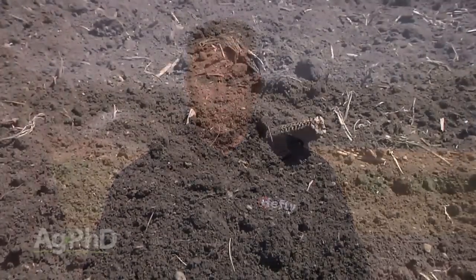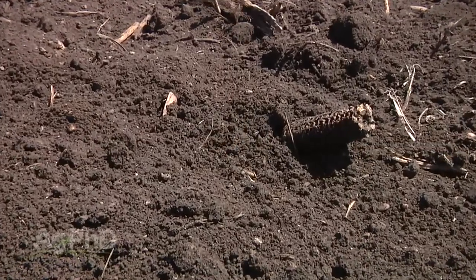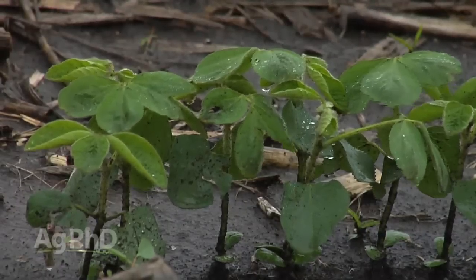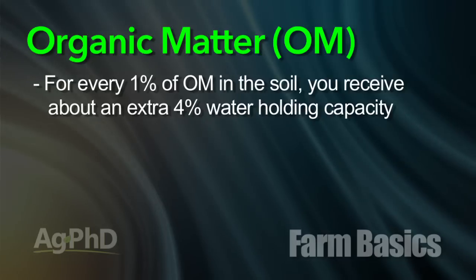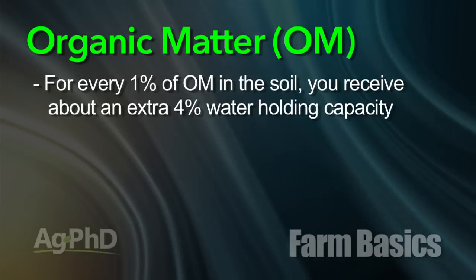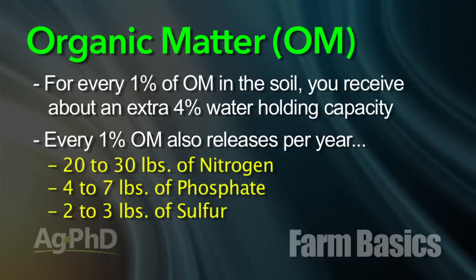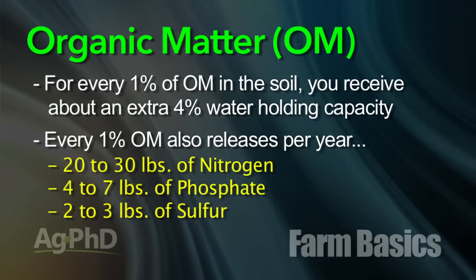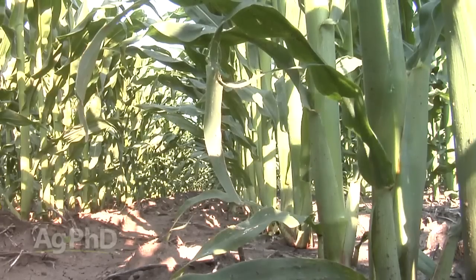With organic matter, and the reason why it's so important to farmers, it does a lot of good things. We want to have a fair amount of organic matter in the soil. Ideally, I'd like to see 5% or 6% organic matter in my soil. It basically makes my soil a little more cushiony — kind of like a sponge — in that it can absorb water and nutrients early in the season and then release the water and nutrients when your crop needs it. For every 1% of organic matter in soil, soil has approximately 4% more water holding capacity. Also, for every 1% of organic matter in the soil, it will release, for free, 20 to 30 pounds of nitrogen, 4 to 7 pounds of phosphate, and 2 to 3 pounds of sulfur every year, as that organic matter slowly breaks down over a long period of time.